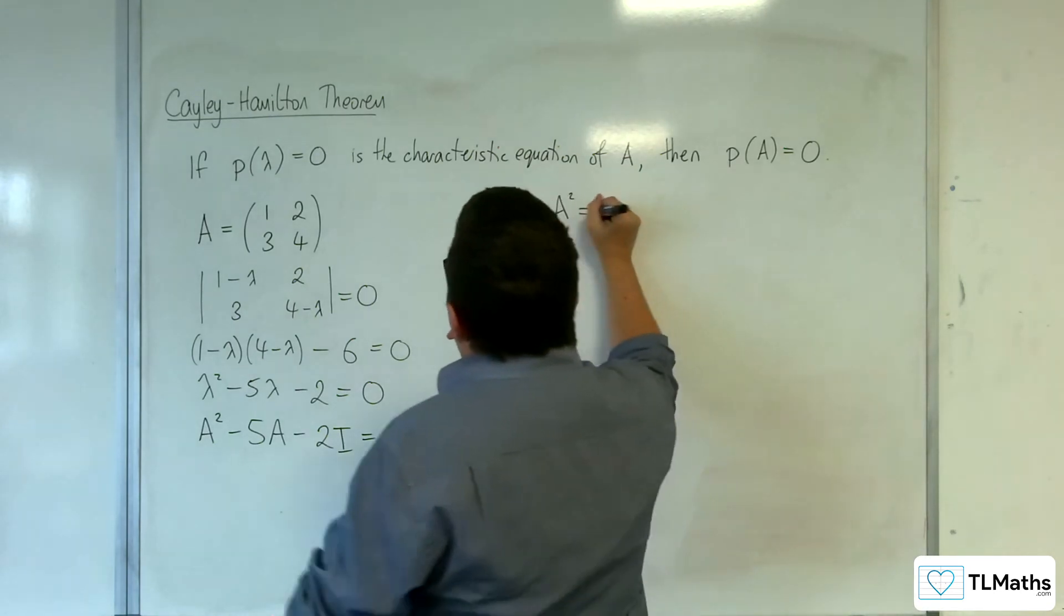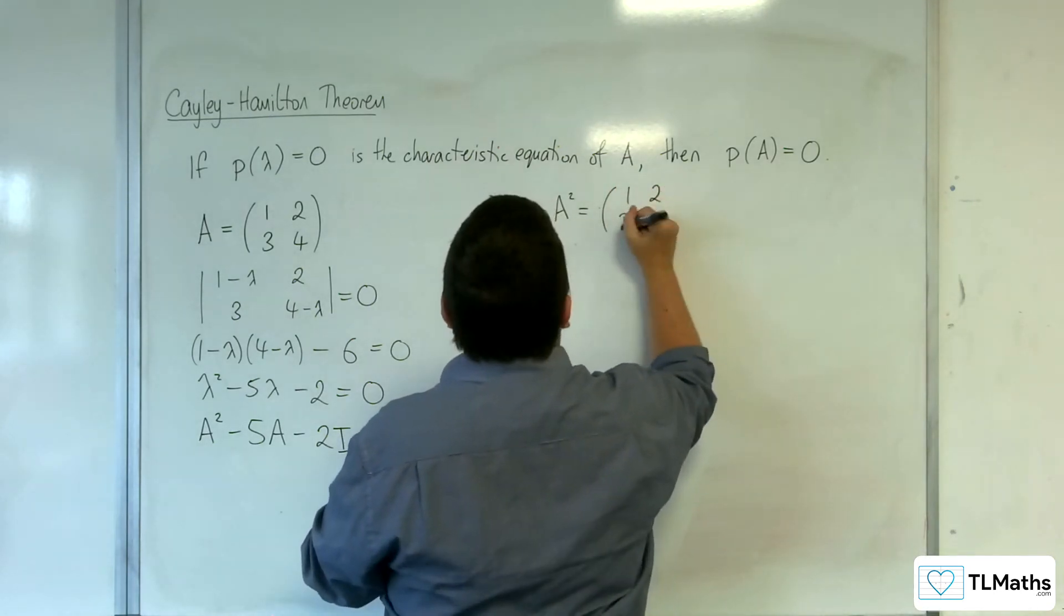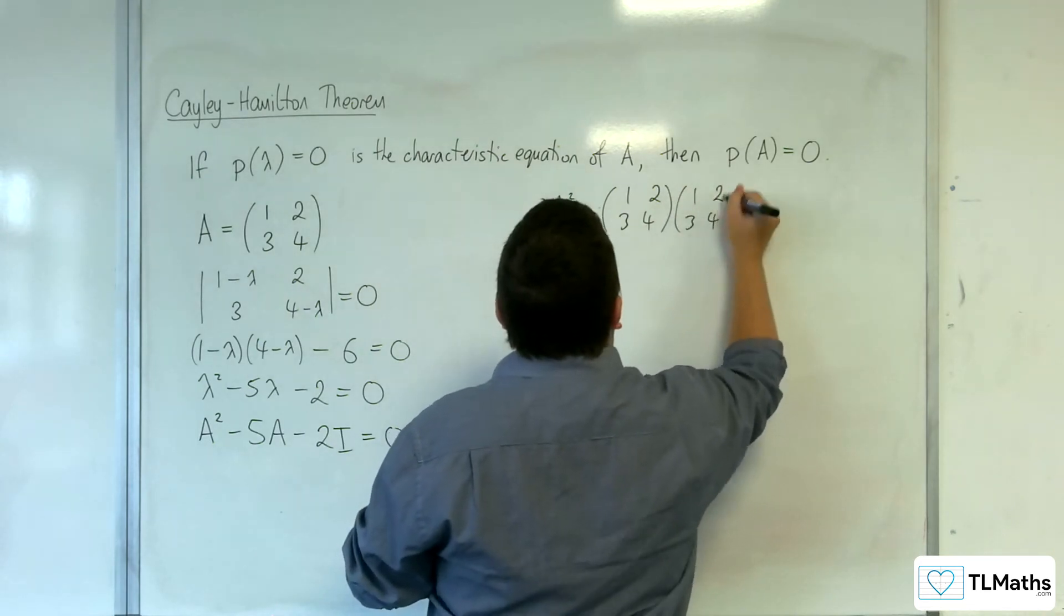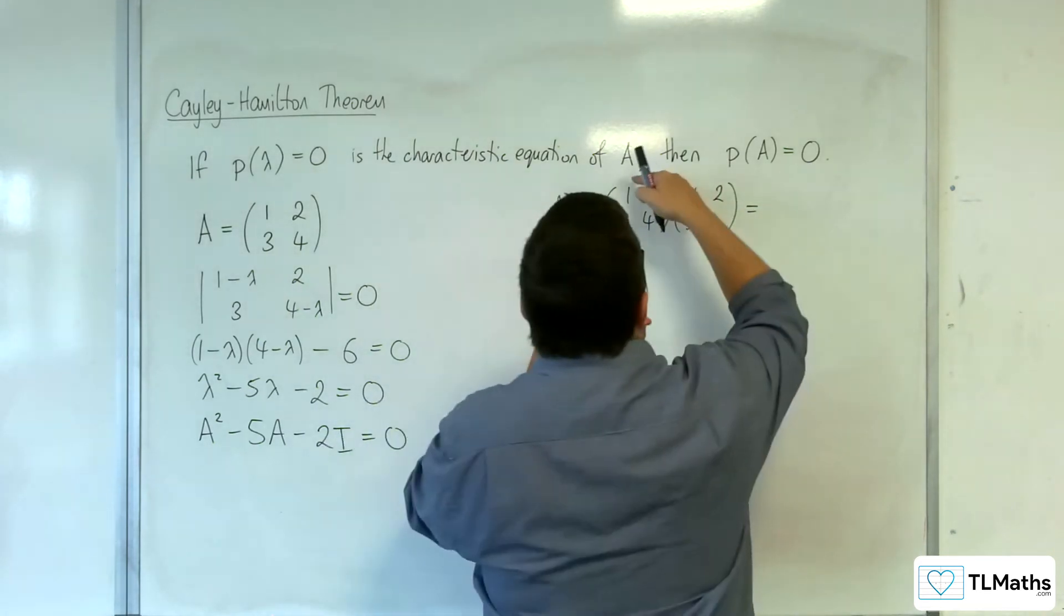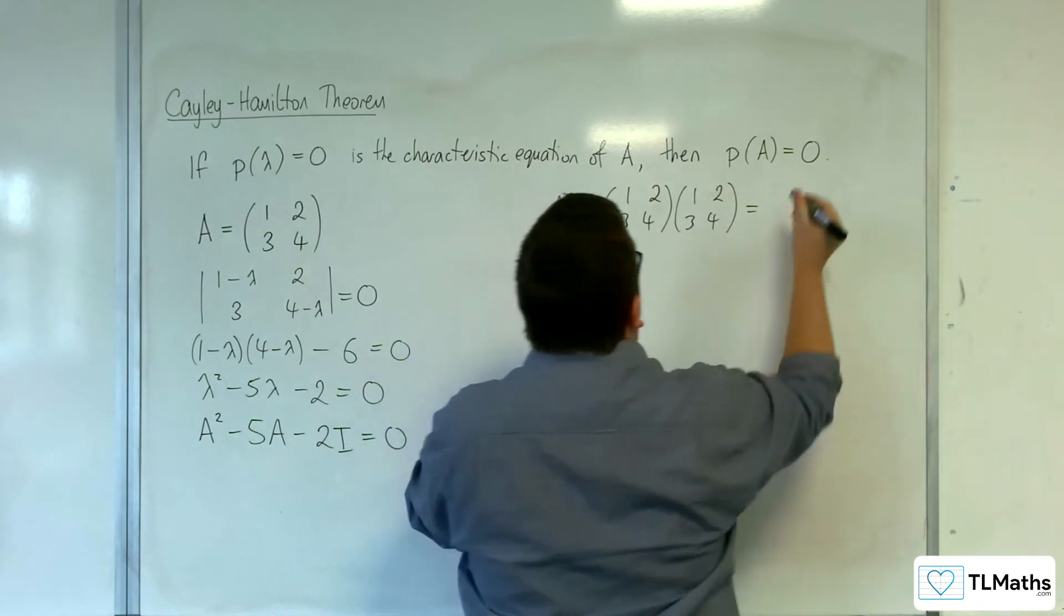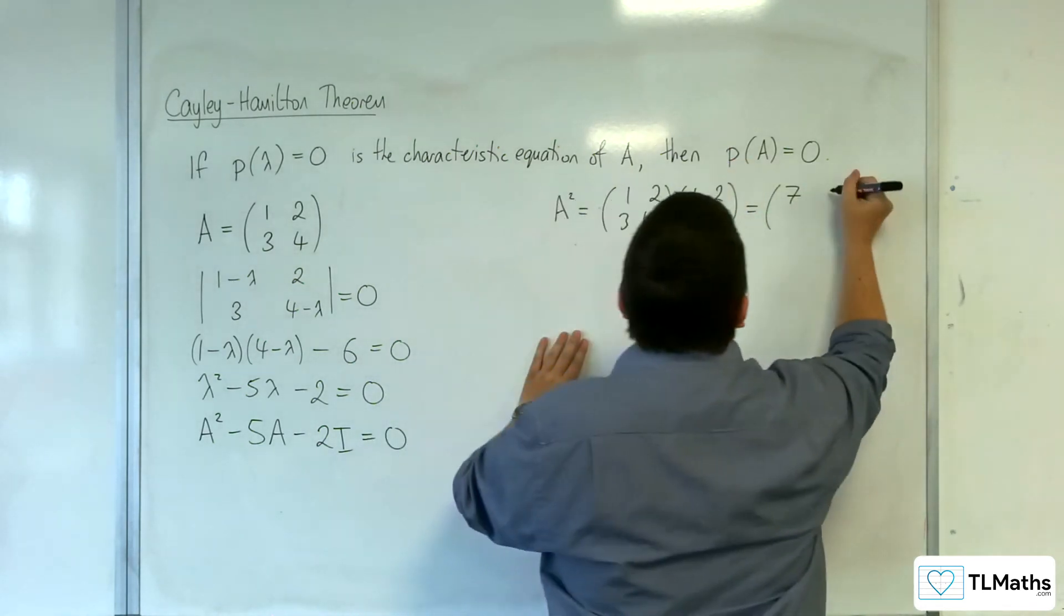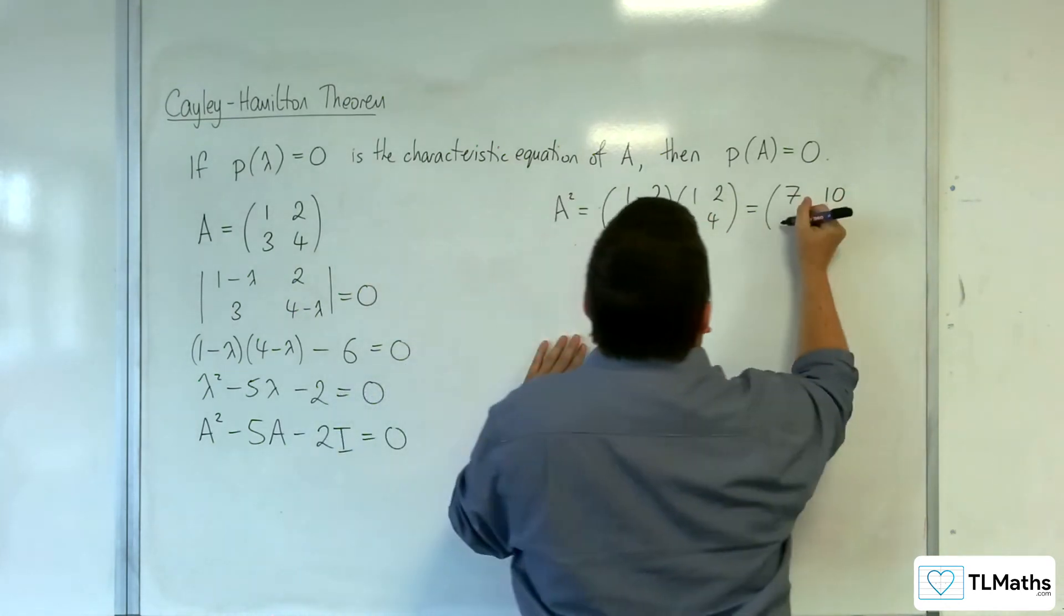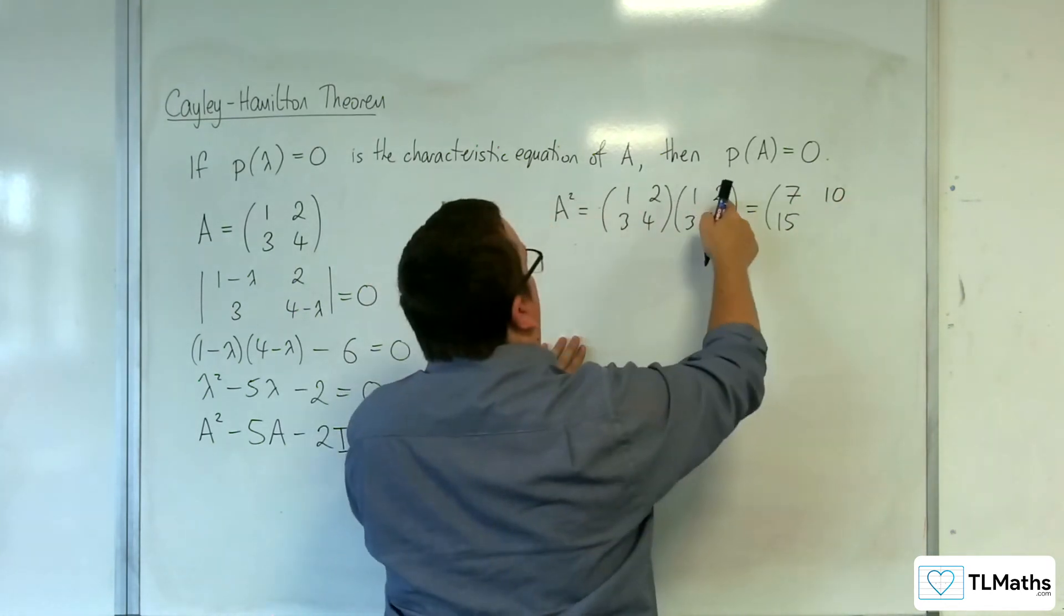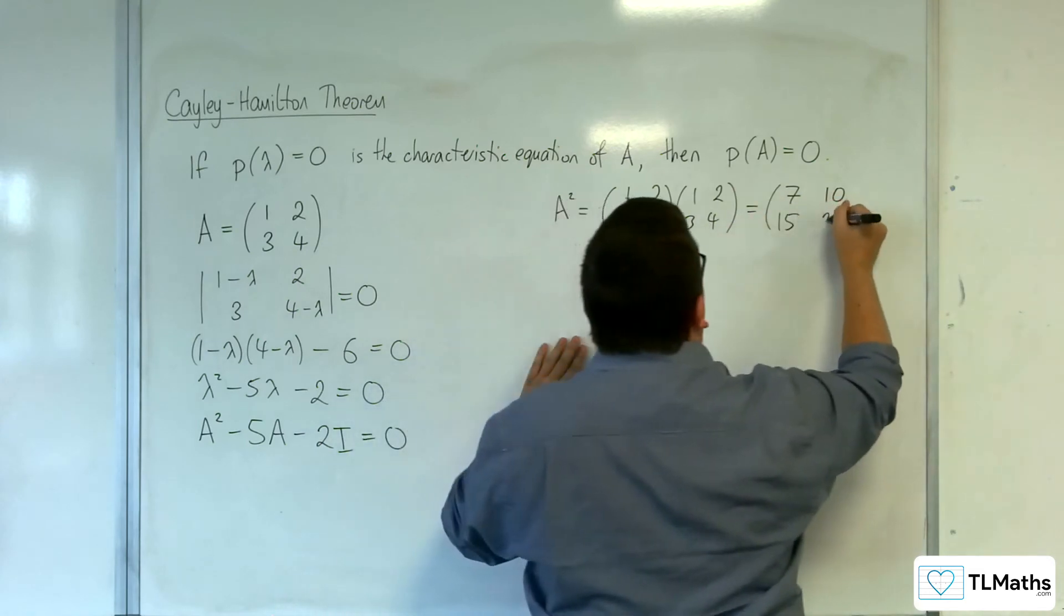So A squared is 1, 2, 3, 4 times 1, 2, 3, 4. So we're going to get 1 times 1 and 2 times 3, so 7. We're going to get 2 and 8, so 10. We're going to get 3 and 12, so 15. We're going to get 6 and 16, so 22.